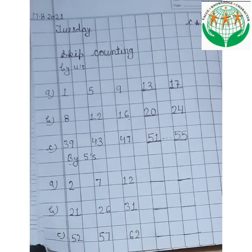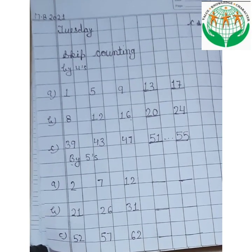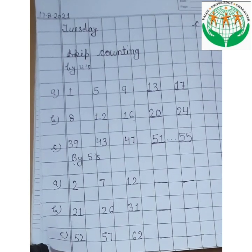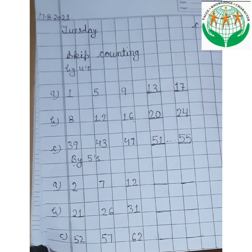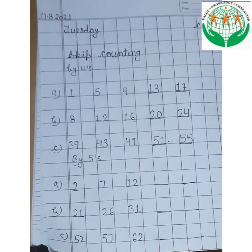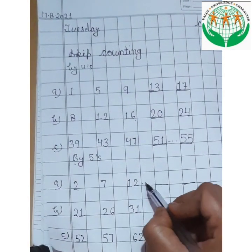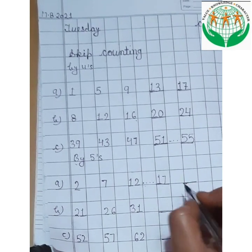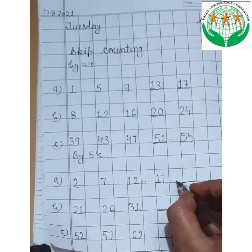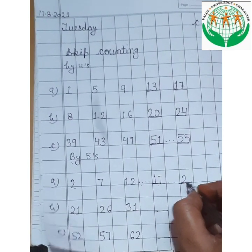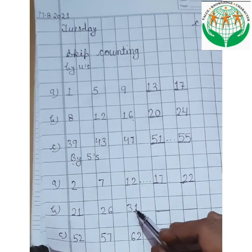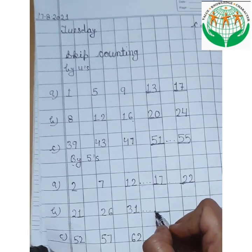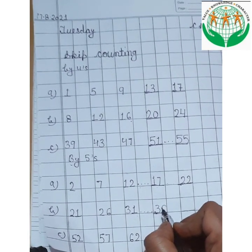How many numbers will we skip? 4 numbers. In skip counting by 4 we skipped 3 numbers, and in skip counting by 5 we will skip 4 numbers. So we skip 13, 14, 15, 16 and write here 17. Then skip 18, 19, 20, 21 and write here 22. Now 31 — skip 32, 33, 34, 35 and write here 36.